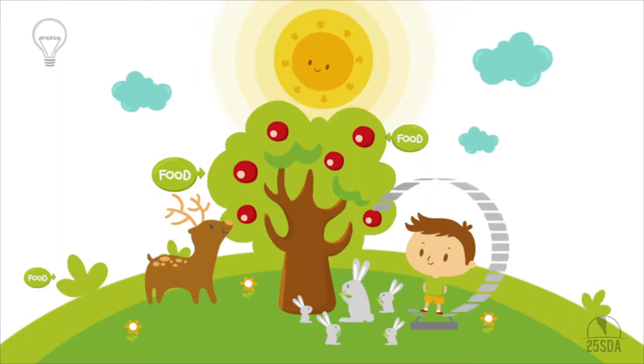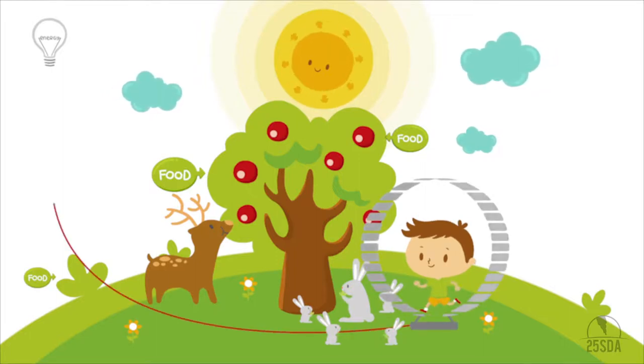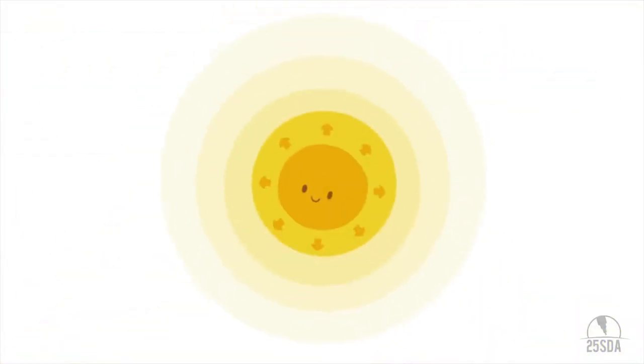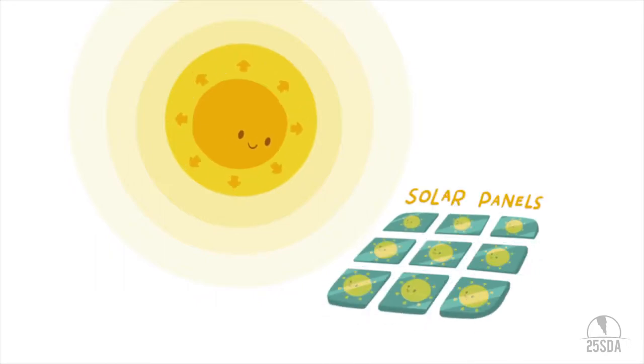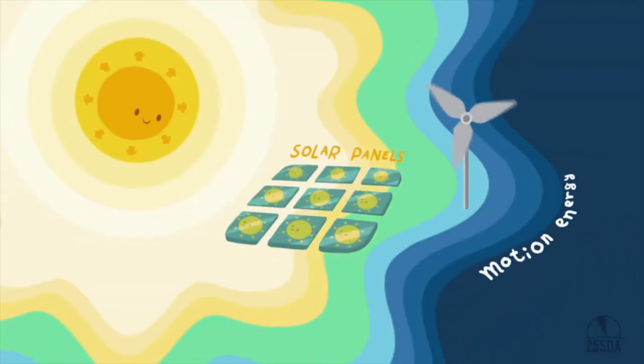Almost anything that moves can be used to create energy, enough to run machines and turn on the light. Energy from the sun can generate electricity using solar panels. We can also use wind for motion and energy.